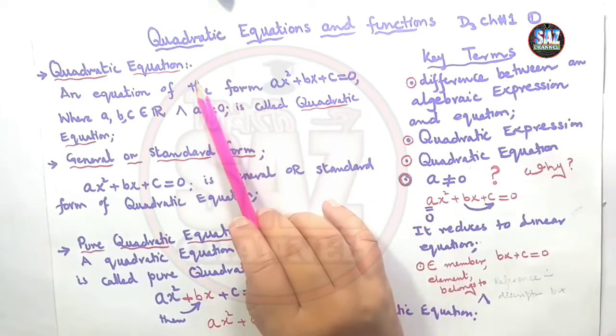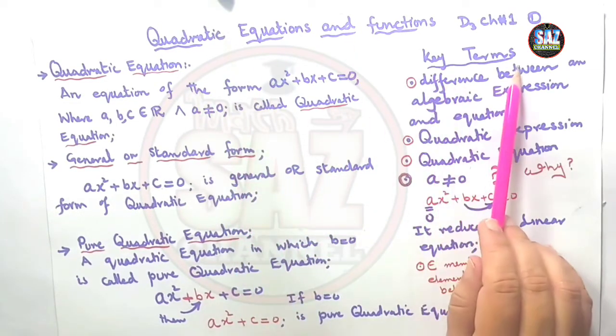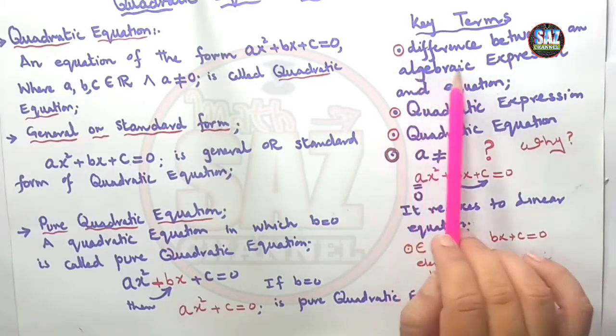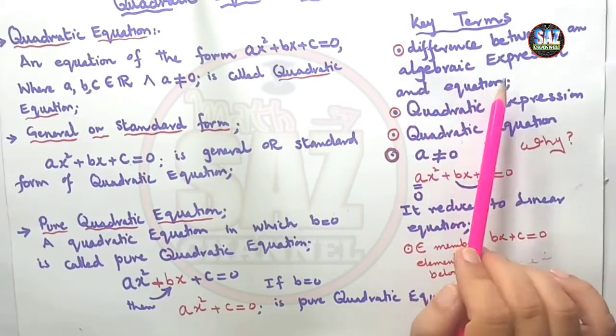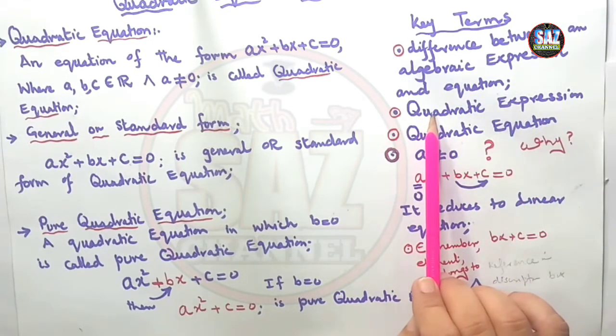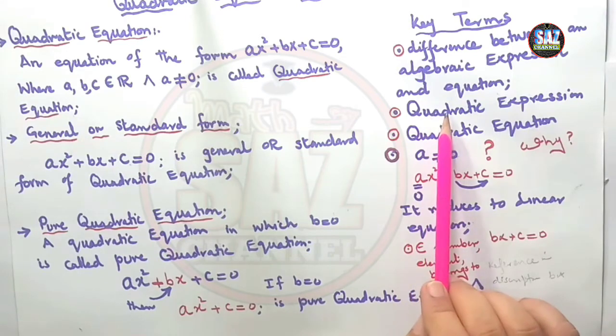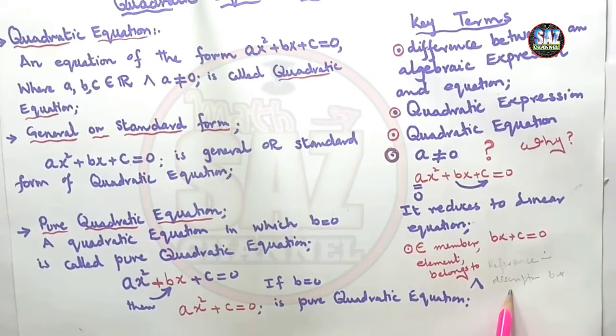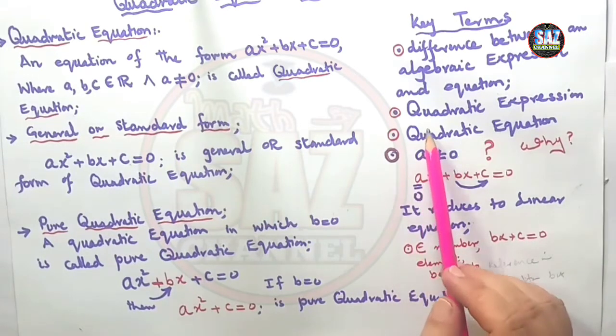Before going to the introduction of the topic, there are some key points. The first point is the difference between an algebraic expression and equation. Quadratic expressions—we have discussed a lot about quadratic expressions in D2 chapter number 3. If you find any difficulty, I'll give the reference in the description box. You can watch the lesson from there.